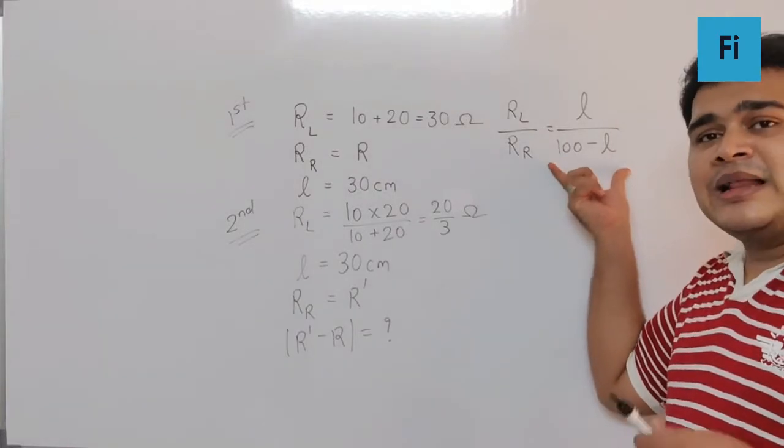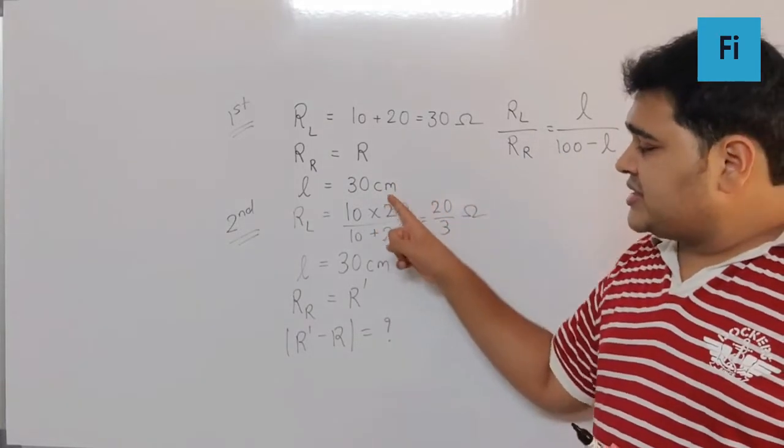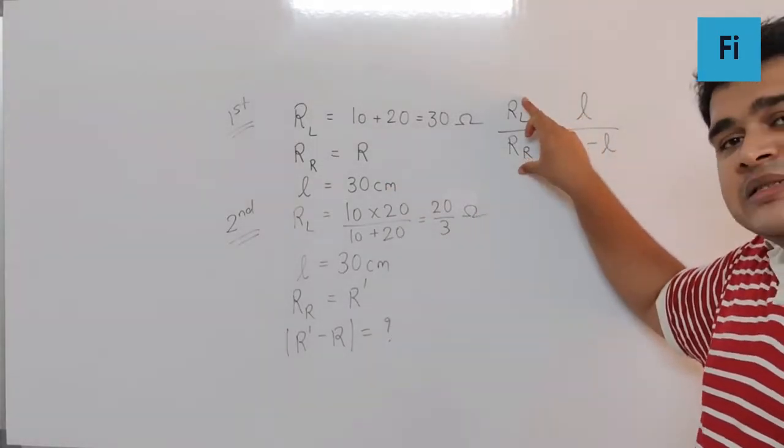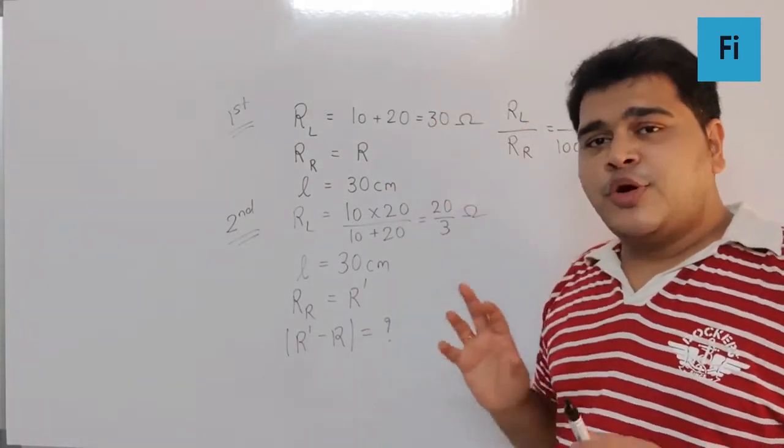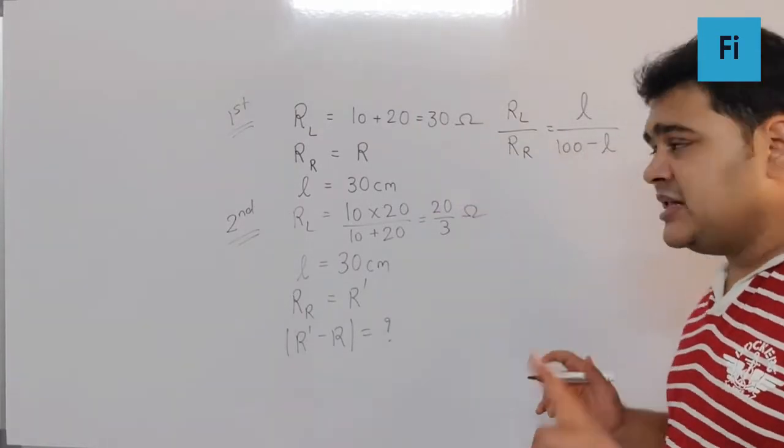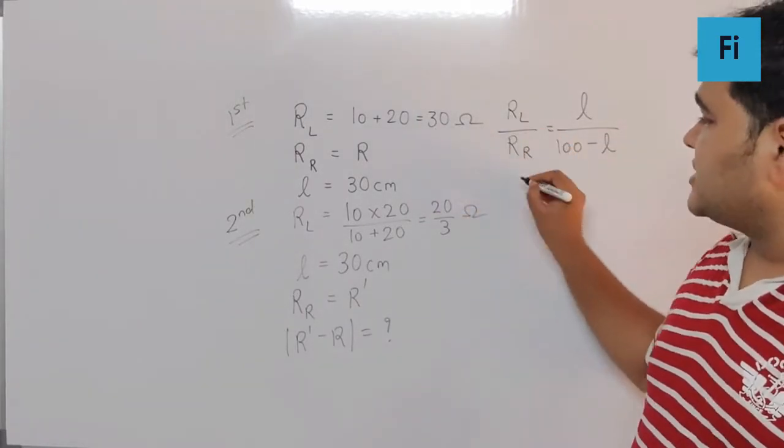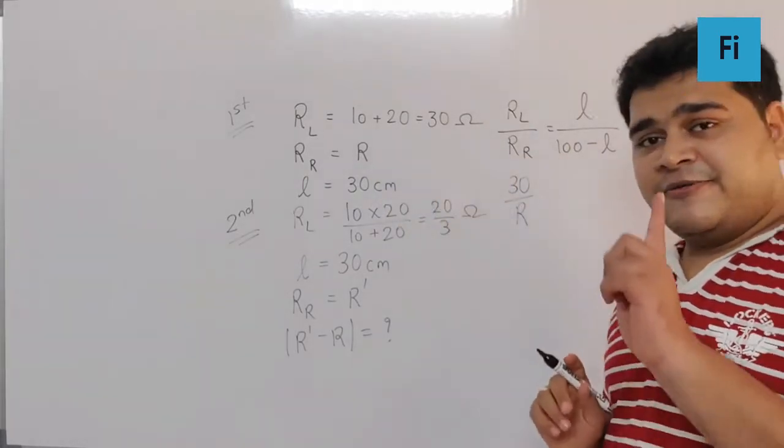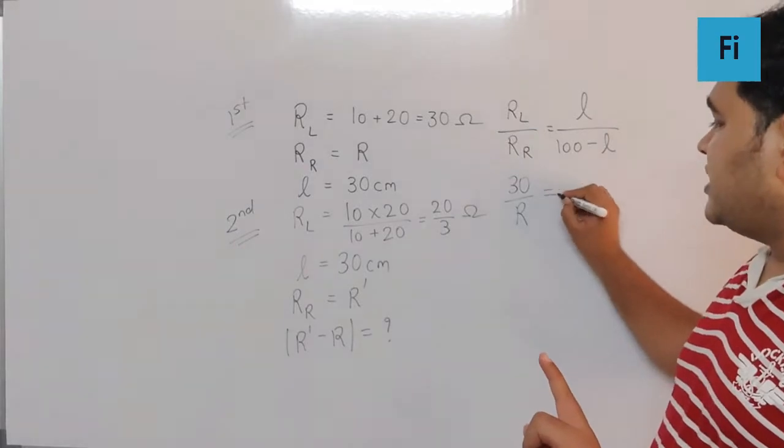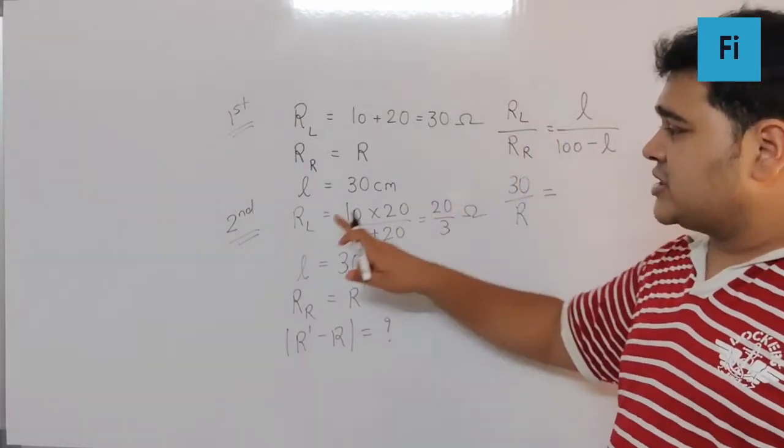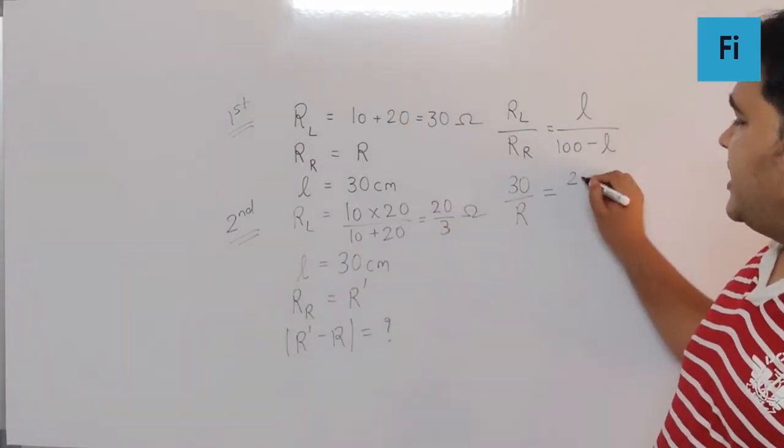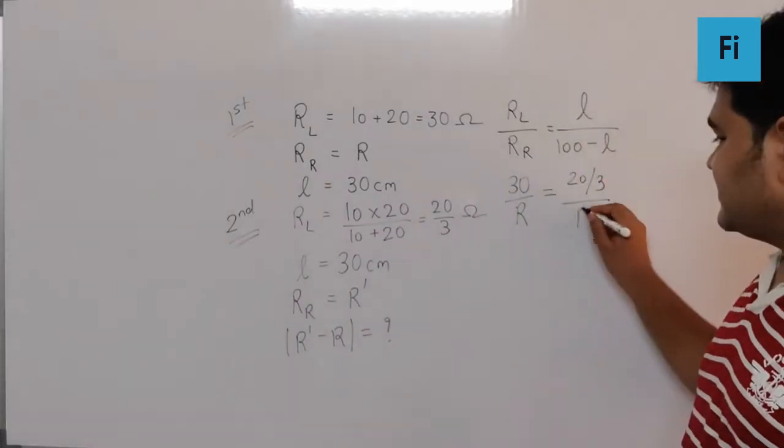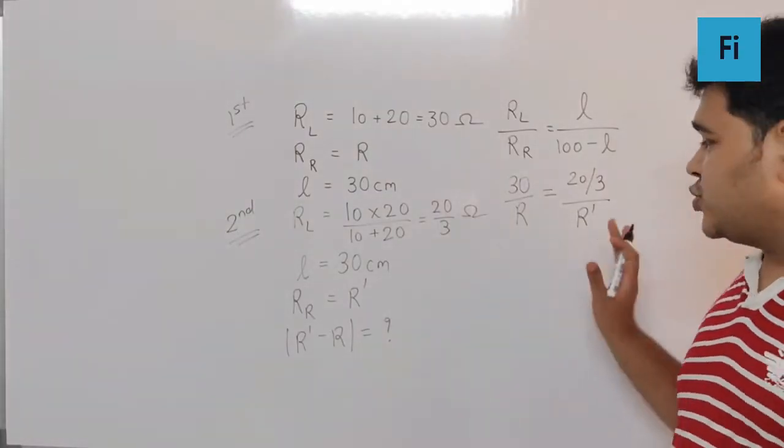L and 100 minus L will be the same in both cases. So the ratio of the resistances in both cases will be the same, which means RL as 30 upon R for the first case equals RL as 20 by 3 upon R prime for the second case.